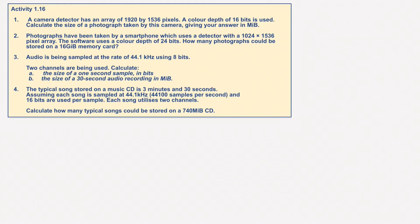A camera detector has an array of 1920 by 1536 pixels. A color depth of 16 bits is used, so it's using 32,768 colors, which we don't need to worry about for this, but that's basically how many colors based on what we learned in the last video. Calculate the size of a photograph taken by this camera. Give your answer in maybe bytes or megabytes.